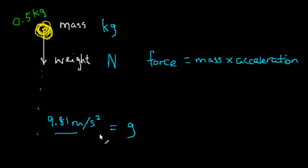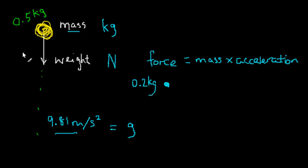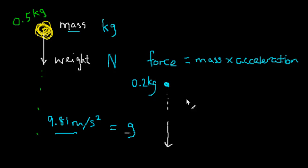The important thing is that the acceleration g is the same regardless of the mass. To make this explicit: suppose I have another ball with a mass of 0.2 kilograms — different from the 0.5 kg ball. If I drop this smaller ball, ignoring air resistance, it will also fall at the same acceleration, even though it is much smaller. The smaller ball does not drop more slowly, nor does the bigger ball drop more quickly.